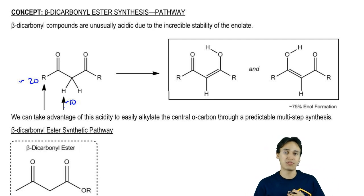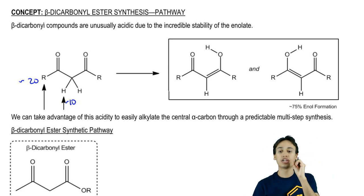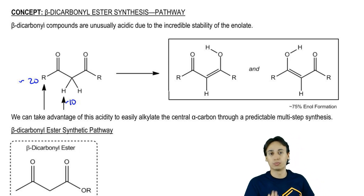That's good for us because if it's easier to deprotonate, that means I have higher yields of the enolate I'm looking for. We're going to use this as an advantage to us, that central carbon, we're going to use it through a multi-step synthesis that will consistently add to that center carbon. It will add R groups.